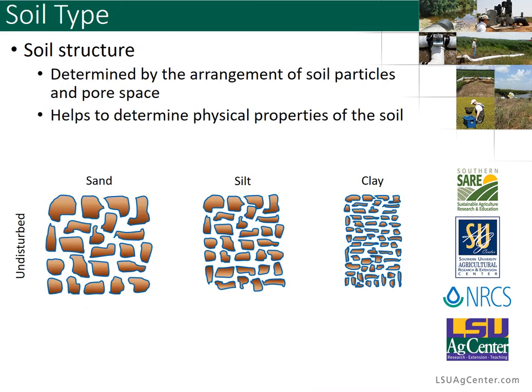The soil structure is the arrangement of those soil particles with pore space, and that will determine the physical properties of the soil. Here we have an exaggerated example of sand, silt, and clay — showing the difference in particle sizes. Sand particles are much larger than clay particles, with silt falling in between. Each soil is made up of air, the actual particle itself, and water. Your pore space is what holds your water. When you have larger pore spaces, you're going to hold less water — so in the sand you hold less water than in the clay, where water can be held to those pore spaces more easily.